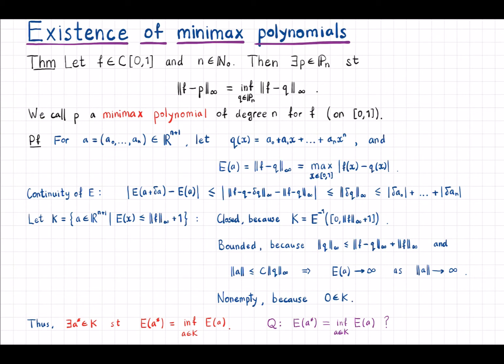Such polynomials are called minimax polynomials. So we have the statement of the theorem here. Recall that this infinity norm is defined by basically taking the maximum of the function over the interval.